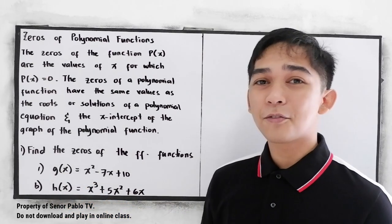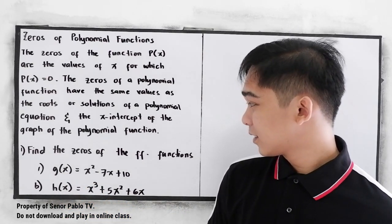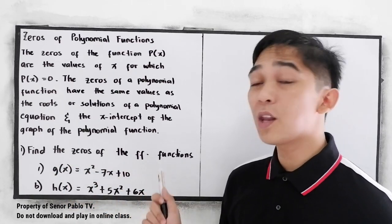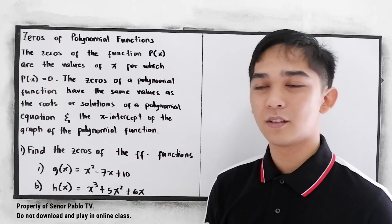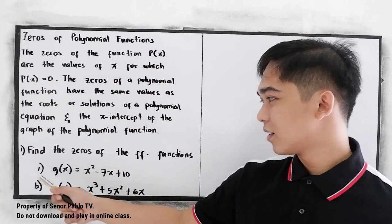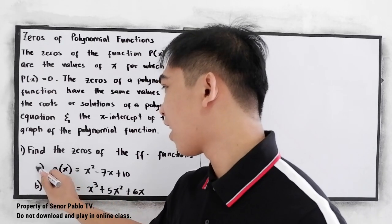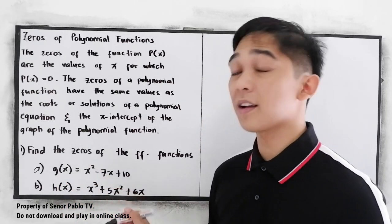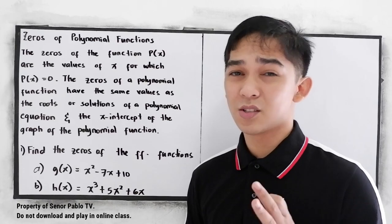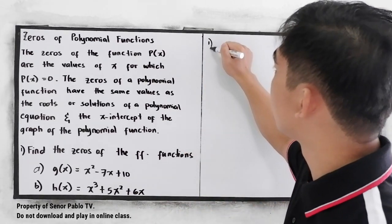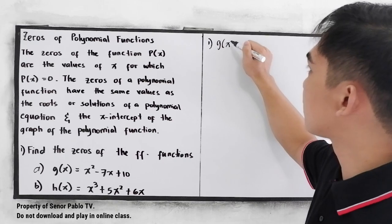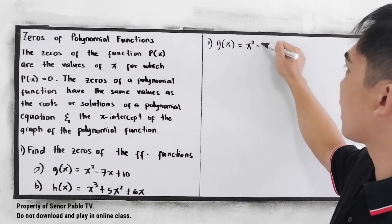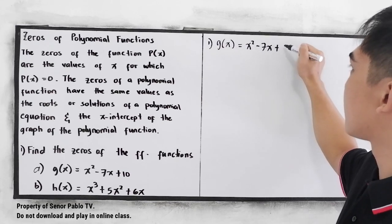Let's have the following exercises. Number 1: Find the zeros of the following functions. Letter A: G of x is equal to x squared minus 7x plus 10. So let us solve. G of x is equal to x squared minus 7x plus 10.